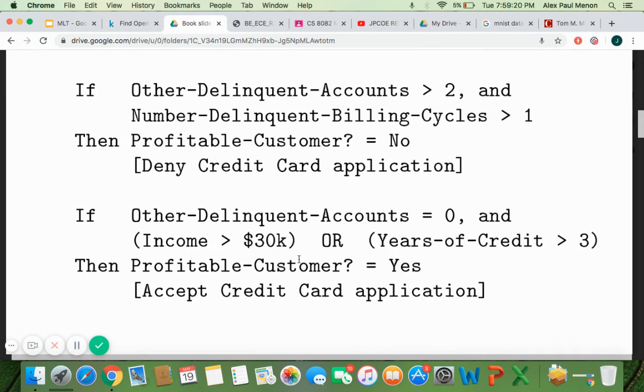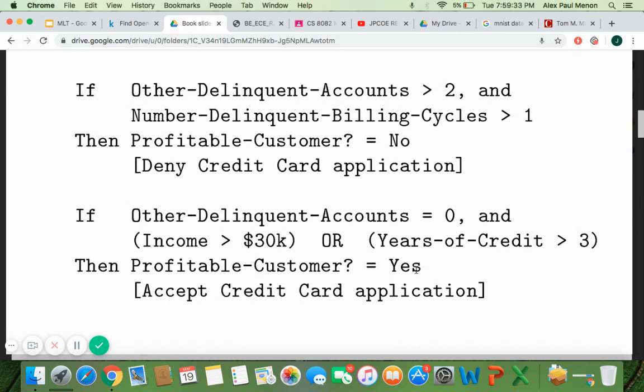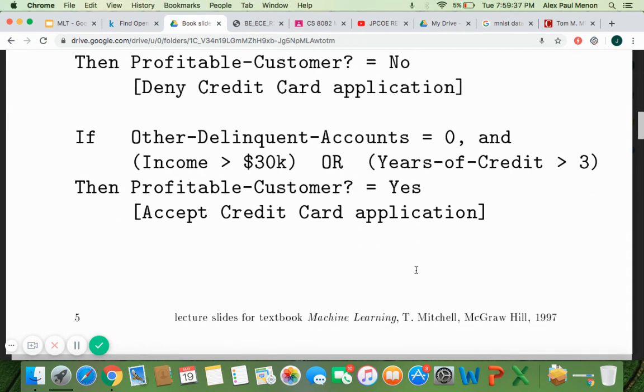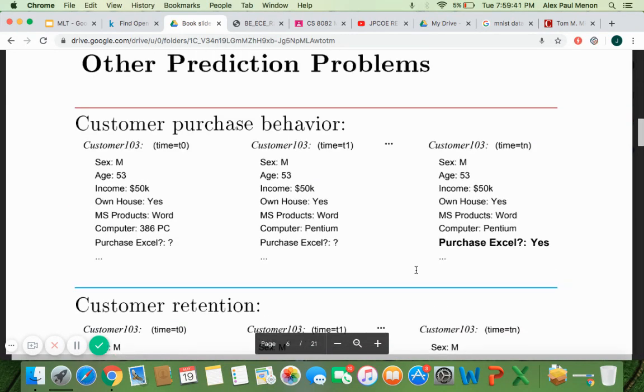Similarly, there can be another condition where delinquent account is zero and income is greater than thirty thousand dollars and the credit years of credit is greater than three, then the customer is profitable for the bank. So the credit card application is accepted. So like this, because each bank will have a lot of customers trying to apply for credit cards.